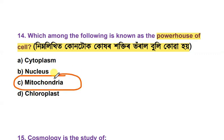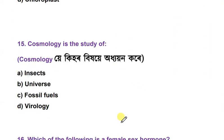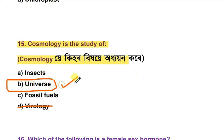Cosmology is the study of what? The options are insects, universe, fossil fuel, and virology. Virology is the study of viruses. The answer is option B — universe. Cosmology is the study of the universe.